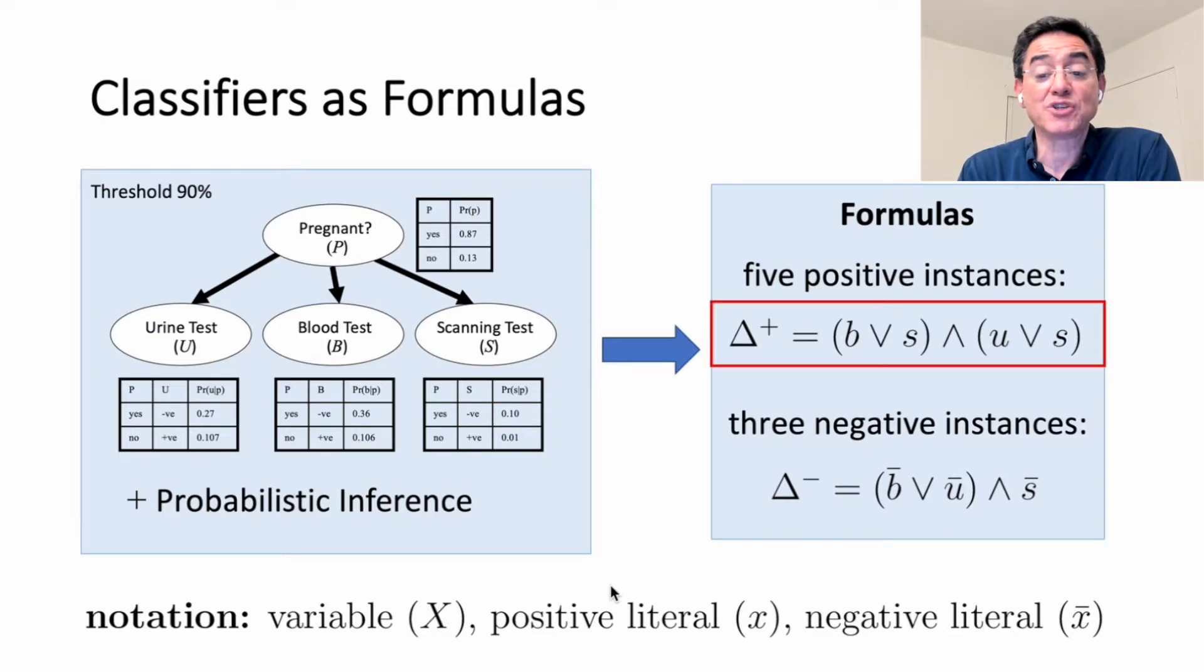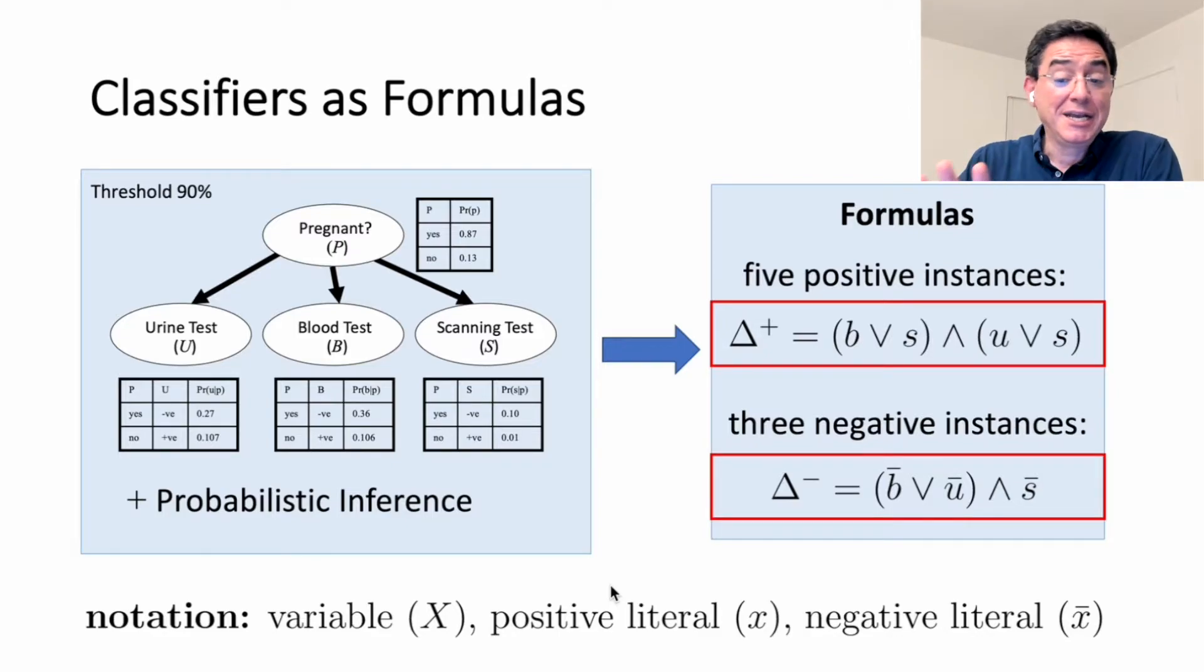Here are the formulas. The first formula, which is this one, captures the positive instances. The second formula captures the negative instances. Once I have these formulas, I don't need the classifier. I can use them to both classify and to reason about the behavior of the classifier, as we will see in just a little bit.